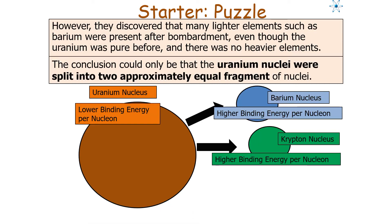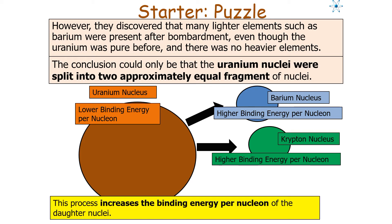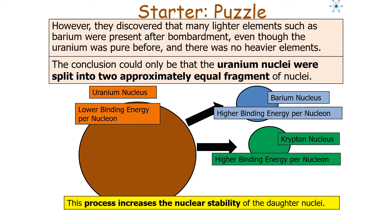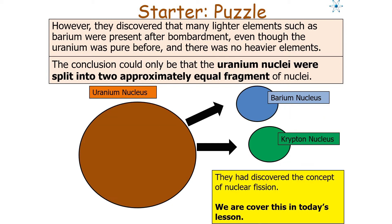However, they discovered there wasn't any larger element present — instead there were many lighter elements such as barium present after the bombardment, even though the uranium was pure before. There could only be one conclusion: the uranium nuclei had split into approximately two equal fragments. This process increased the binding energy per nucleon and the nuclear stability of the daughter nuclei. What the two physicists had discovered was the concept of nuclear fission.